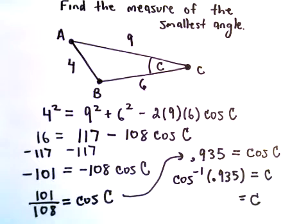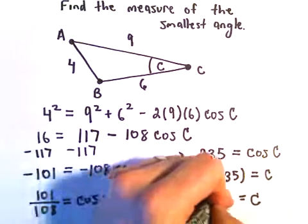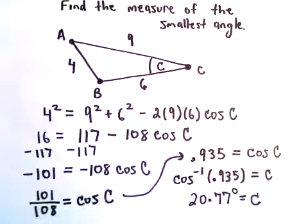And let's see here. I think this should be, let me double check one more time, so .935. If we do the inverse cosine of that, I'm getting this to be 20.77 degrees after rounding here a little bit.